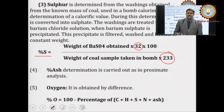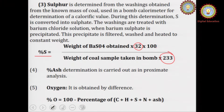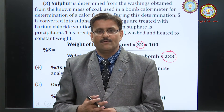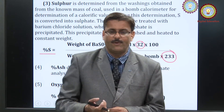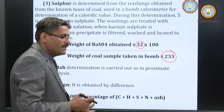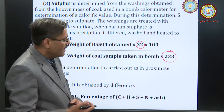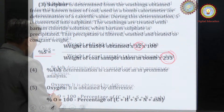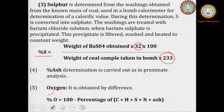Ash content is then calculated — the estimation of ash has already been discussed in proximate analysis and the same method is used here. The percentage of oxygen is calculated by subtracting the percentages of carbon, hydrogen, sulfur, and nitrogen from 100. In this way, we calculate the percentage of oxygen.